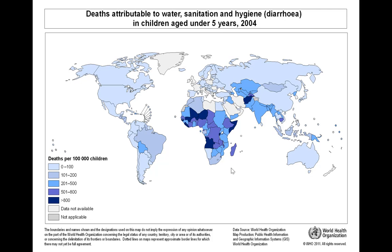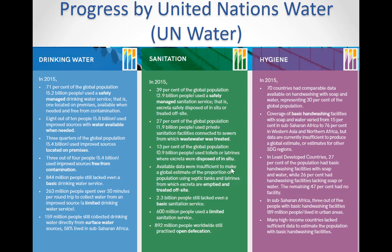Here we are showing a map from 2004. Even though this WHO map is slightly old, it depicts deaths attributable to water, sanitation and hygiene in children aged under five years all over the world. Based on the chart, we can see that across Africa, the number of deaths from diarrheal diseases is highest in the world. This shows how important it is to improve availability of clean water and promote safe sanitation and hygiene practices.